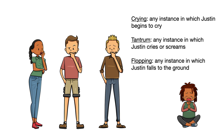Operational definitions are important for accurate data collection. They ensure that anyone observing a behavior can decide if the behavior occurs or not. If the definition of a behavior is vague, people won't know which behavior they're observing.